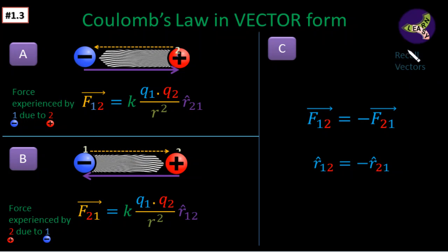And in part C, you can see here you have to recall some ideas of vectors to understand this concept. F12 is equal to minus F21 because F21 is opposite of F12. Similarly, in case of the unit vectors also, you have to put a minus sign so that R12 will become R21 if you put a minus sign before R21.